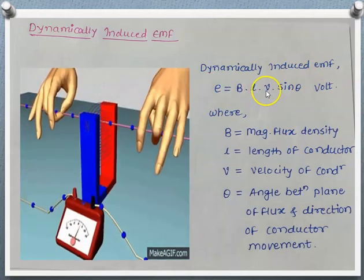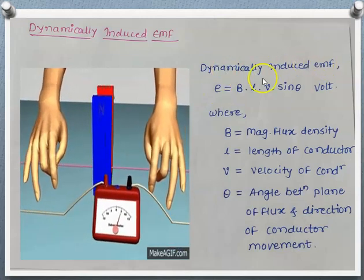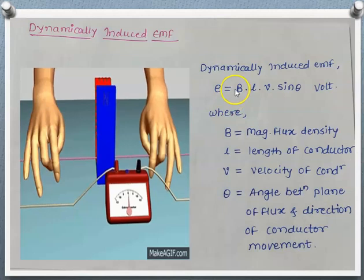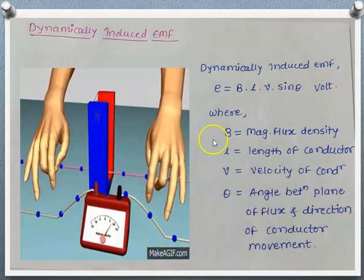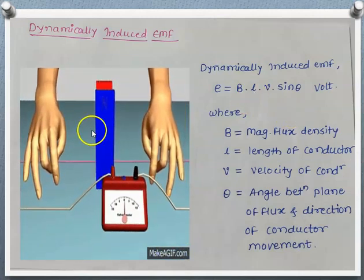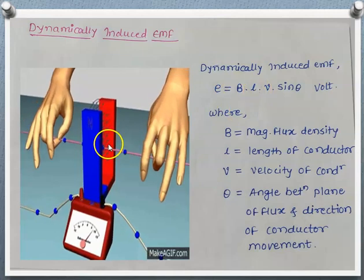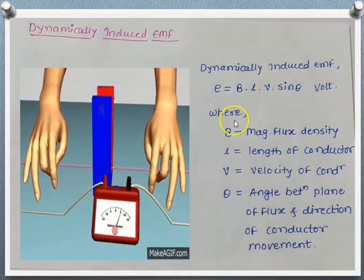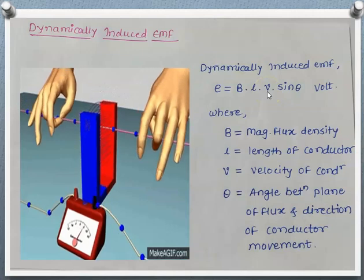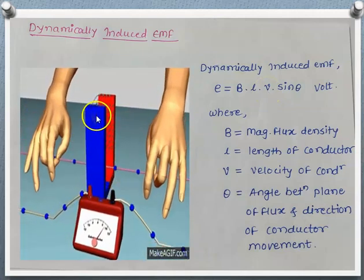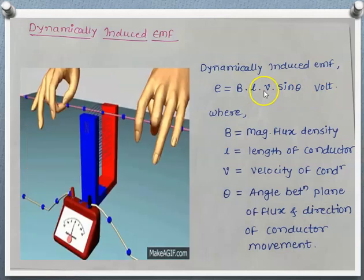The dynamically induced EMF E is given by the expression: E = B × L × V × sinθ. Here B is the magnetic flux density produced by the magnet, L is the length of conductor placed in the magnetic field — only the length actually placed within the field is considered — and V is the velocity of the conductor, since here the conductor is moving and the field is stationary. V is measured in meters per second.